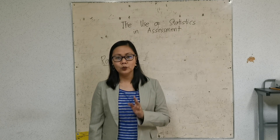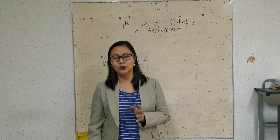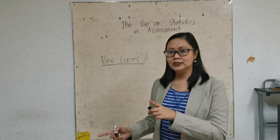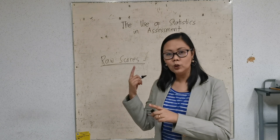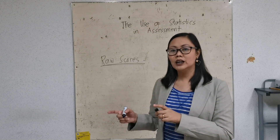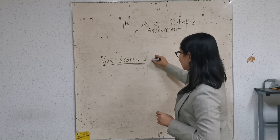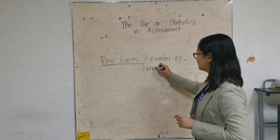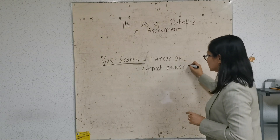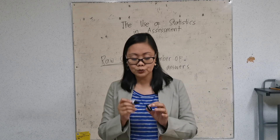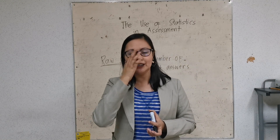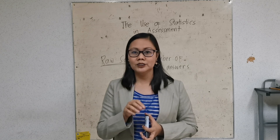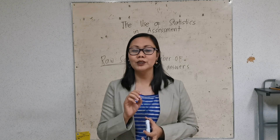The scores that your students will get from the quizzes and examinations are called raw scores. The scores obtained by your students in their quizzes, examinations, or term requirements are called raw scores. Raw scores refer to the number of correct answers. For instance, if you have 10 items and they got 4 correct answers, the raw score of your student is 4.